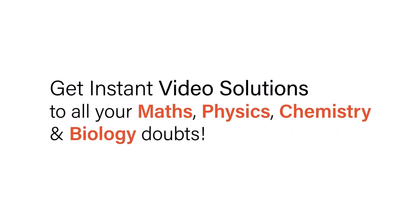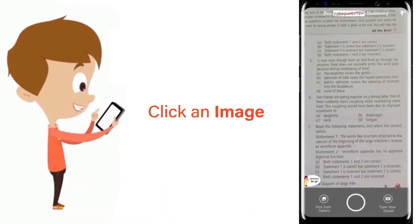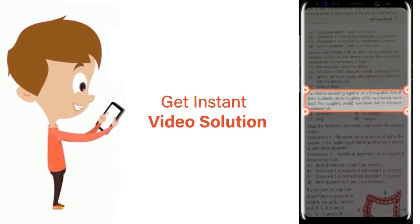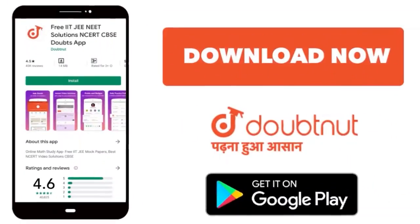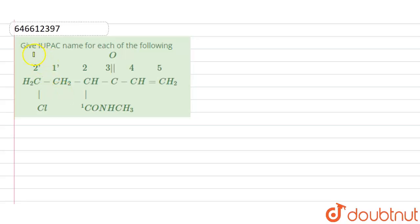With Doubtnut, get instant video solutions to all your math, physics, chemistry, and biology doubts. Just click the image of the question, crop the question, and get an instant video solution. Download the Doubtnut app today. Hello everyone, let's start the question. The question says give IUPAC name for each of the following and the compound is given over here.